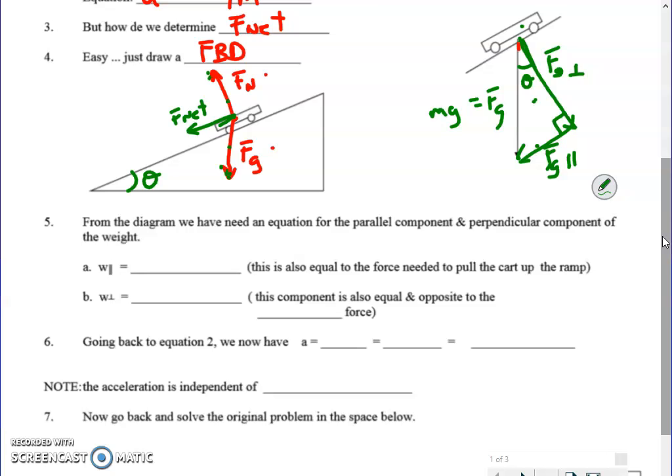All right so from the diagram we need an equation for parallel and perpendicular components. So I have this written as w. Let's call it Fg parallel. How would we calculate that? Well if I go to my diagram here it's this component and I see that that component is opposite the angle theta. So that's a clue as to what trig function I want to use.